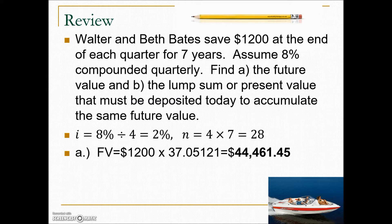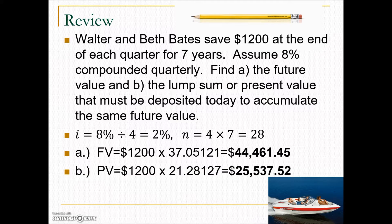The second part asks us what we would need as a lump sum today to accomplish that same value as their plan of putting $1,200 every quarter for the next 7 years. We're looking for the present value or lump sum that's equivalent and will generate that same value 7 years from now. Our I and N are the same — 2% and 28 — but we're going to use the present value table.